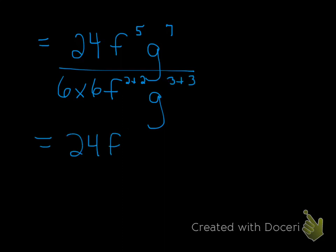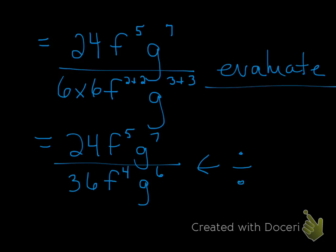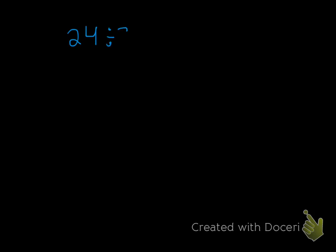There's nothing I can do in the numerator, so I'm just going to rewrite that. Now I'm going to evaluate the denominator. So 6 times 6 is 36, f to the power of 2 plus 2 is f to the power of 4, and g to the power of 3 plus 3 is g to the power of 6. I have to continue this because there's a division, so I'm going to write 24 divided by 36.